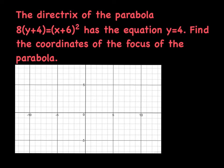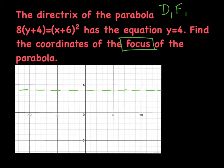We're going to see different twists and turns on this type of question from past Regents exams. The directrix of this given parabola has the equation y equals 4, so I'm going to draw y equals 4. They want you to find the coordinates of the focus. Typically there are three characteristics of the parabola we focus on: the directrix, the focus, and the vertex. Out of those three, they should always give you two so you can find the third.